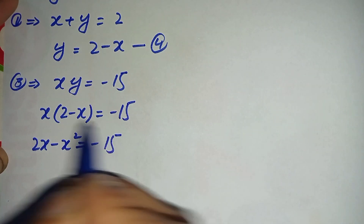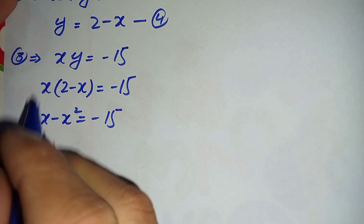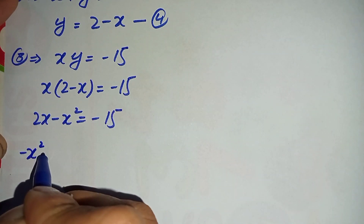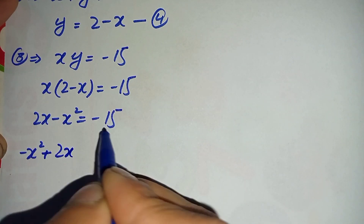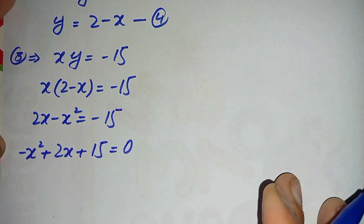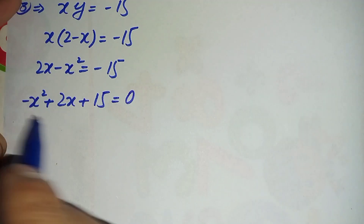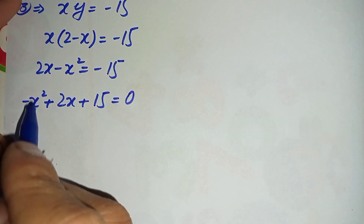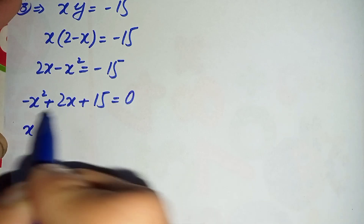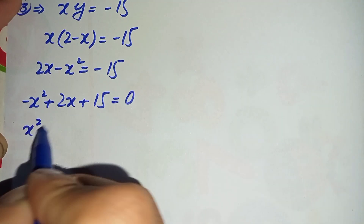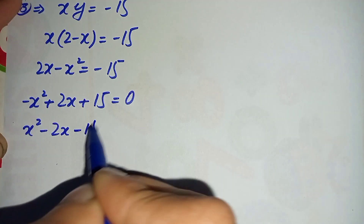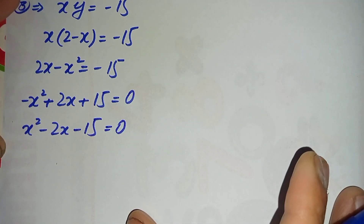Here we will take minus 15 to the left hand side and rearrange: minus x squared plus 2x plus 15 is equal to 0. We then multiply this equation by minus 1 to make the coefficient of x squared positive, giving x squared minus 2x minus 15 is equal to 0.